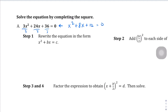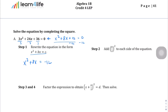I want to rewrite this equation with the C term on the other side. So I subtract 12 from both sides and end up with x squared plus 8x equals negative 12. Now it's in the form where we can start completing the square. We take that B term, which is 8, divide by 2, and square it.